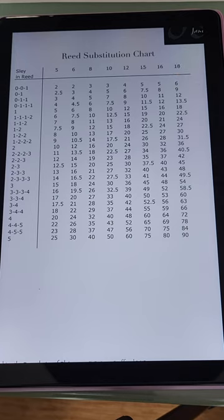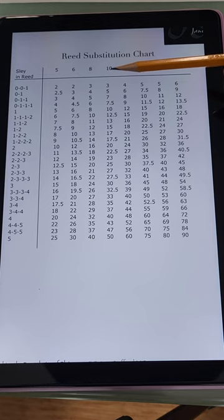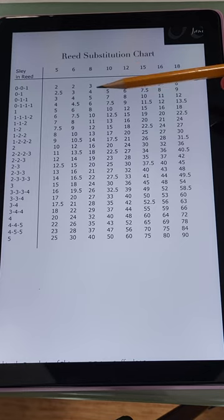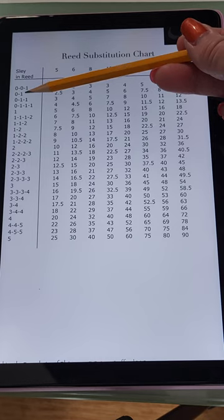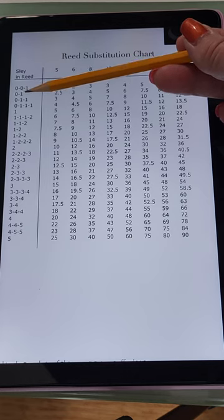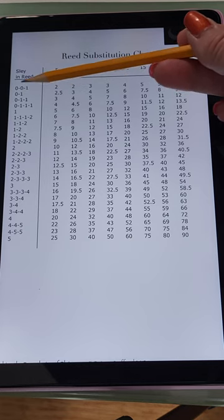Likewise, if you had the same 10-dent reed and you want to weave at five ends per inch, you would go down to five across and you would slay every other dent in the reed with one thread. So you'd have one, a blank, one, a blank, one, a blank.